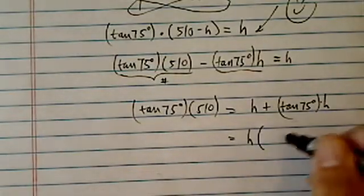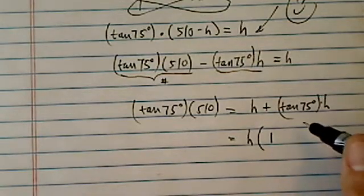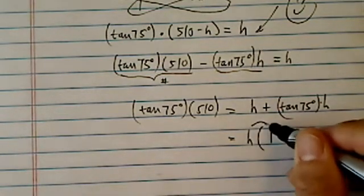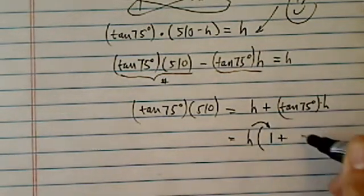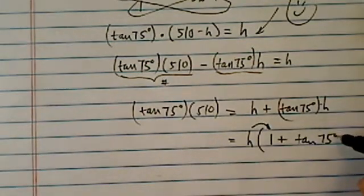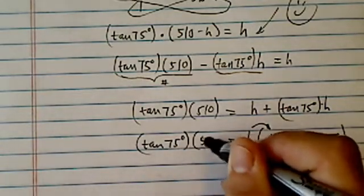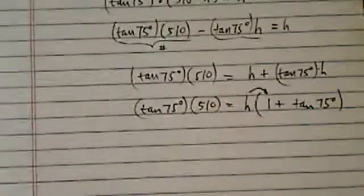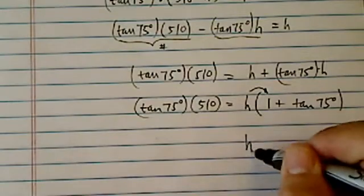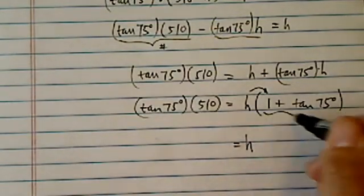A couple more steps over there. Pulling the h out, first one is 1, not a 0, because 1 times h is h. h plus tangent of 75 degrees is equal to, I know, I know, I'm just stubbornly copying it. I don't like decimals. Okay, so h equal to, I'm going to divide it this way.